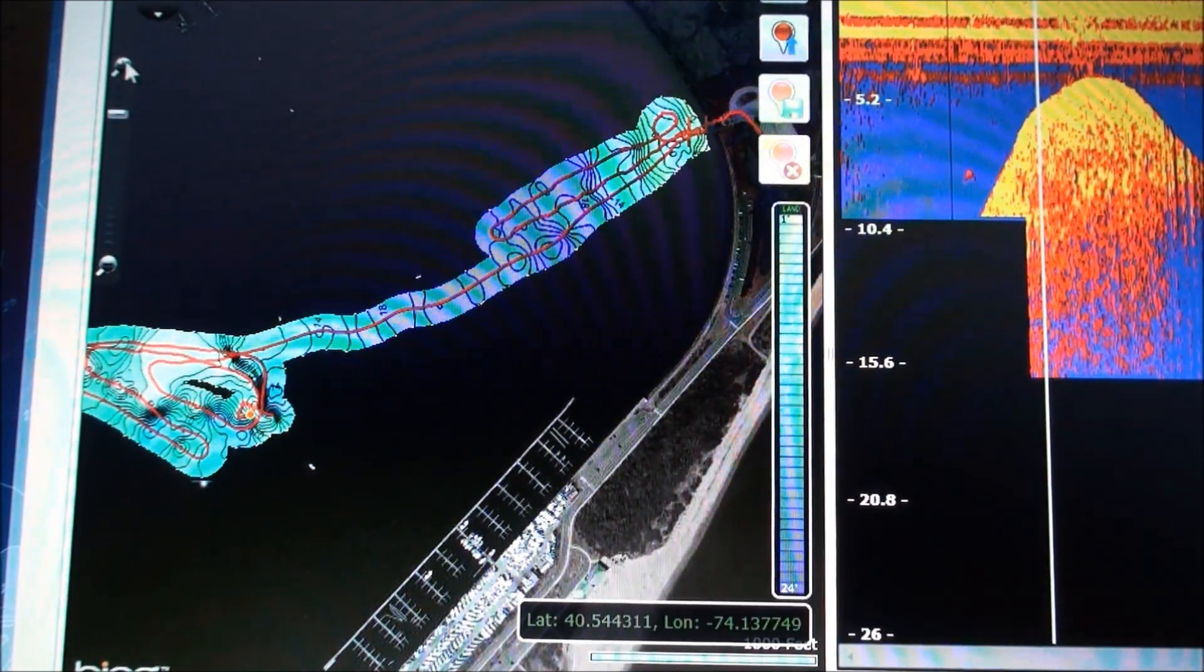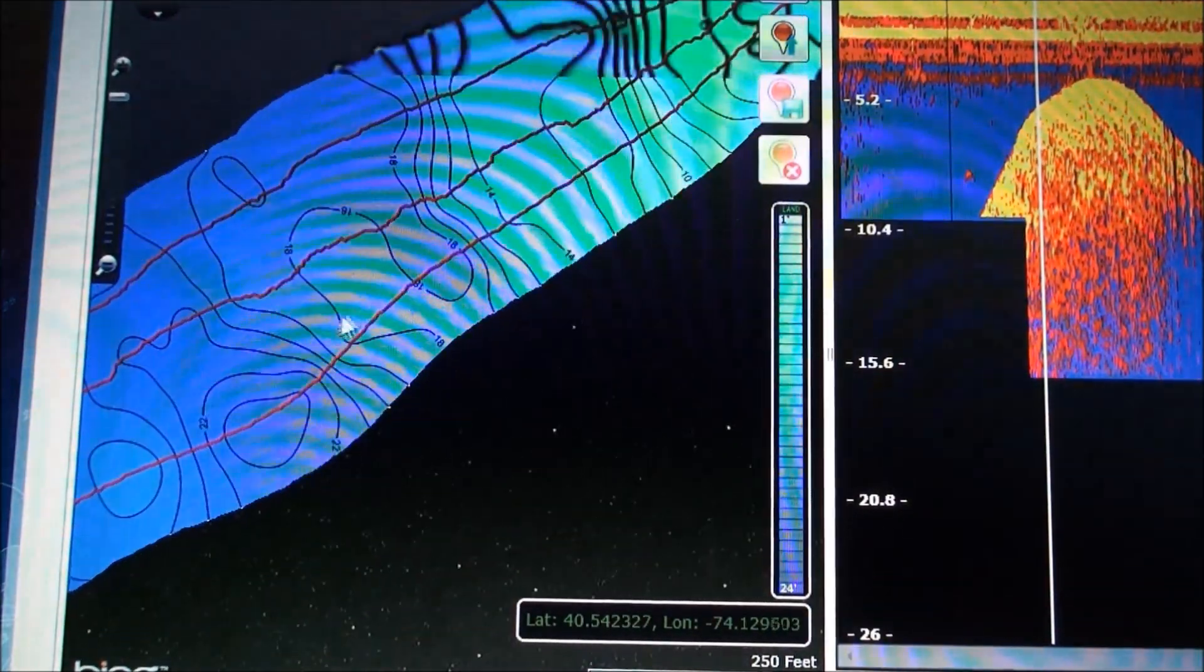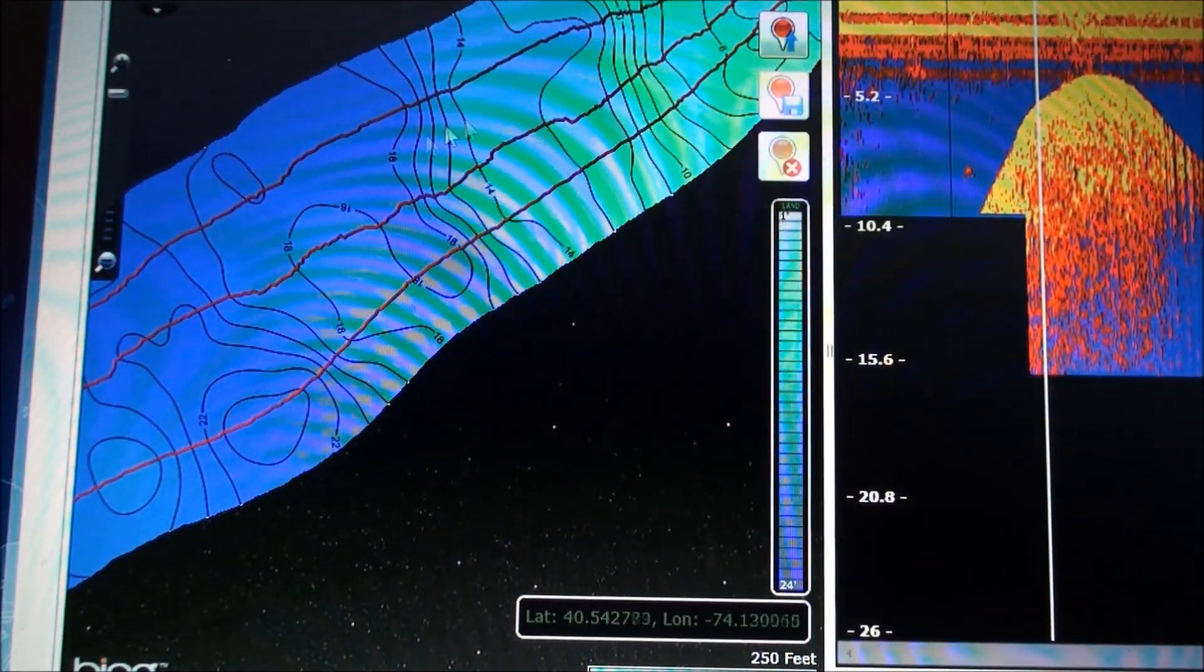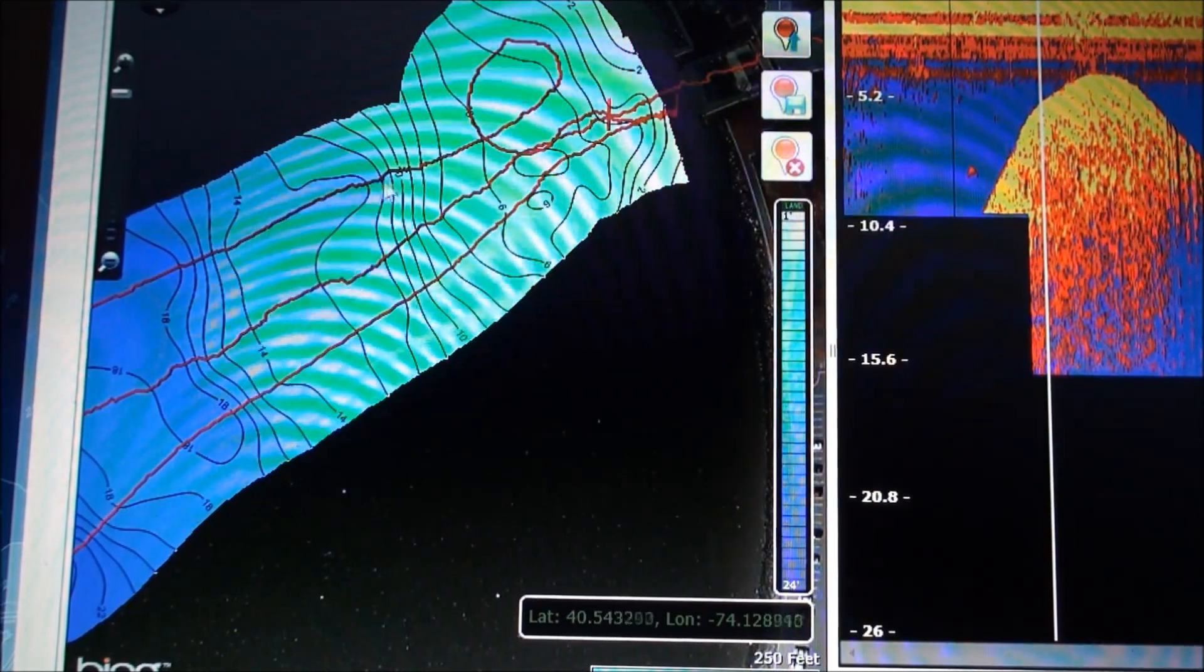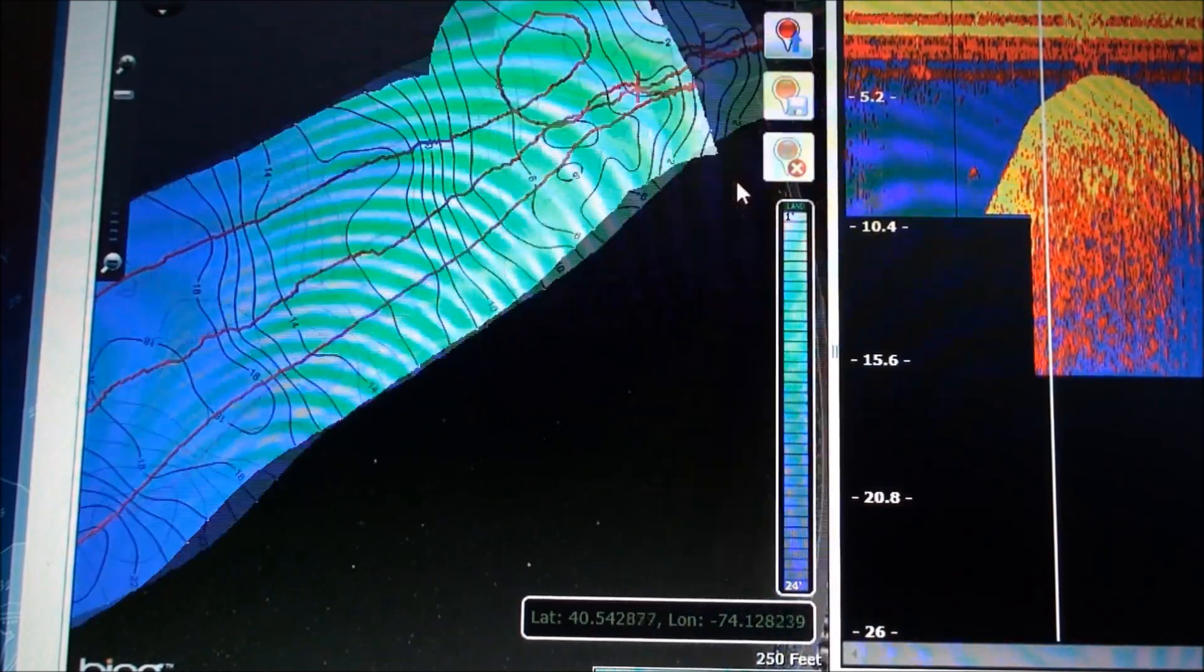I'll zoom in a little here. This is right by the boat ramp. While he was getting the truck, I was able to make one or two more quick passes, and you can see it added more detail and more info each time. And there's the ramp right here.